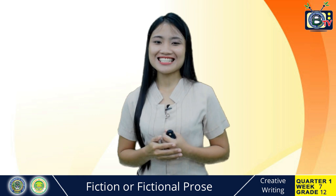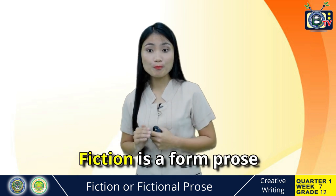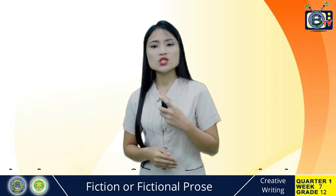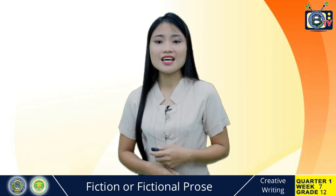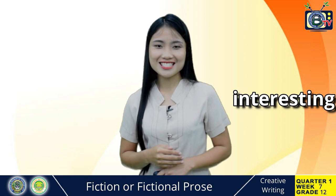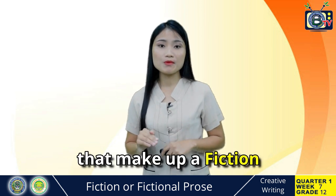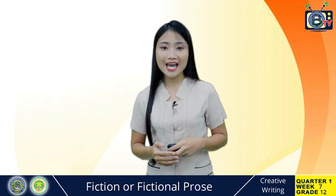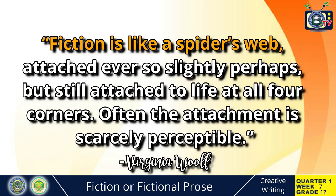I hope you were able to understand the lesson. Bear in mind that fiction is a form of prose created in the imagination of its author — it does not aim to tell a true story. Instead, it immerses us in experiences we may never have in real life, introduces us to types of people we may never otherwise meet, and takes us to places we may never visit in any other way. It can help us see ourselves and our world in new and interesting ways. Remember that there are seven elements that make up fiction: setting, characters, plot, conflict, point of view, theme, and tone. Before we conclude, I want you to ponder on this quotation from Virginia Woolf: 'Fiction is like a spider's web, attached ever so lightly perhaps, but still attached to life at all four corners. Often the attachment is scarcely perceptible.'